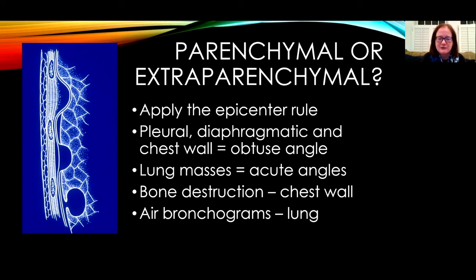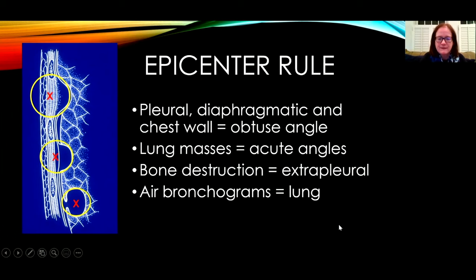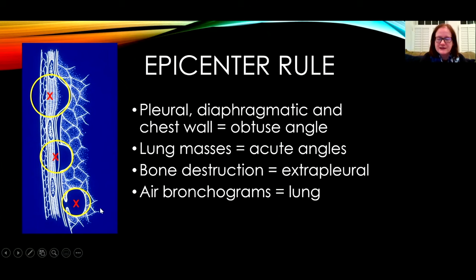There are other features we look for as well, such as bone destruction which often indicates a chest wall lesion, and if you find air bronchograms that will indicate a lung lesion. By using the epicenter rule, we draw a circle continuing from the lesion and then determine where the center of that lesion would be. The uppermost lesion has its epicenter outside of the lung, in keeping with a chest wall or pleural lesion, whereas the lowermost lesion has its epicenter in the lung, indicating it's a lung lesion.